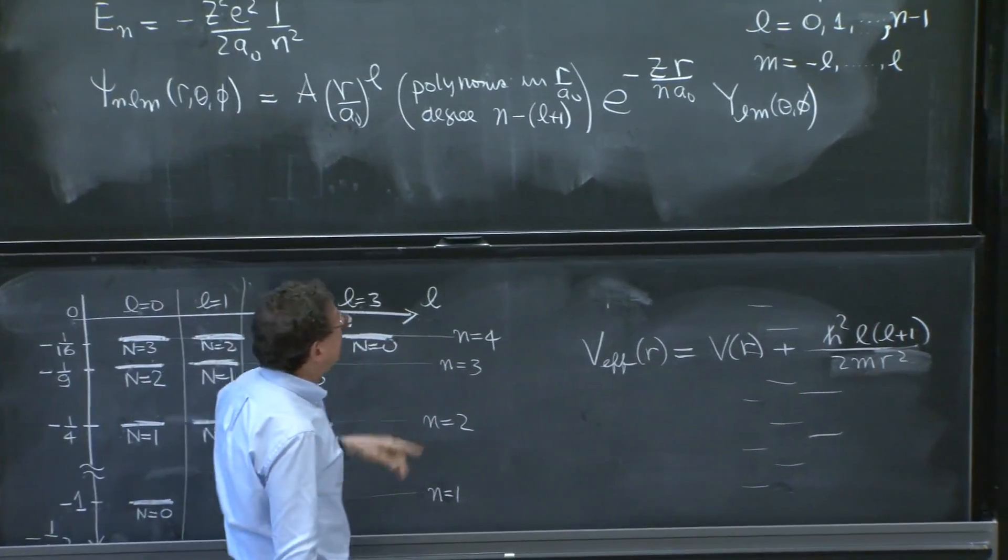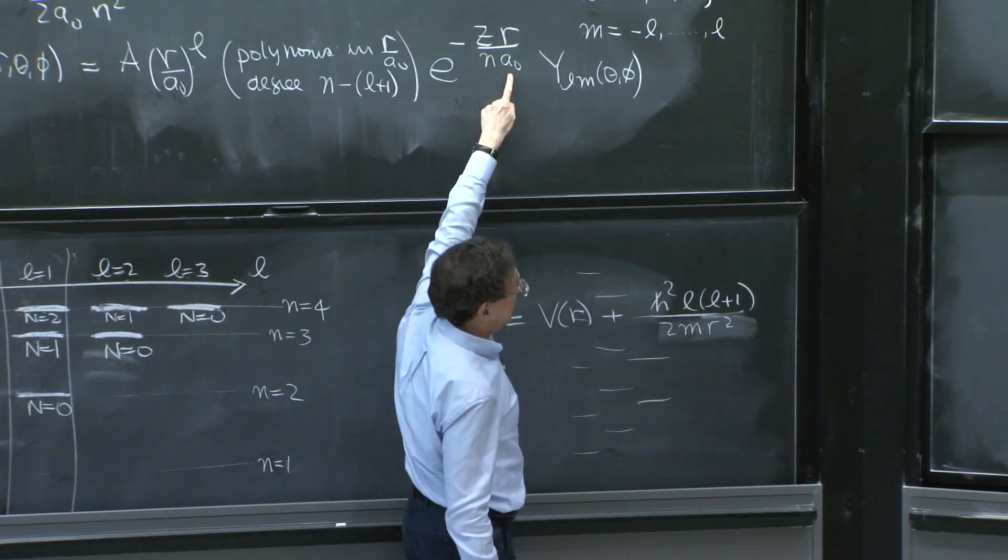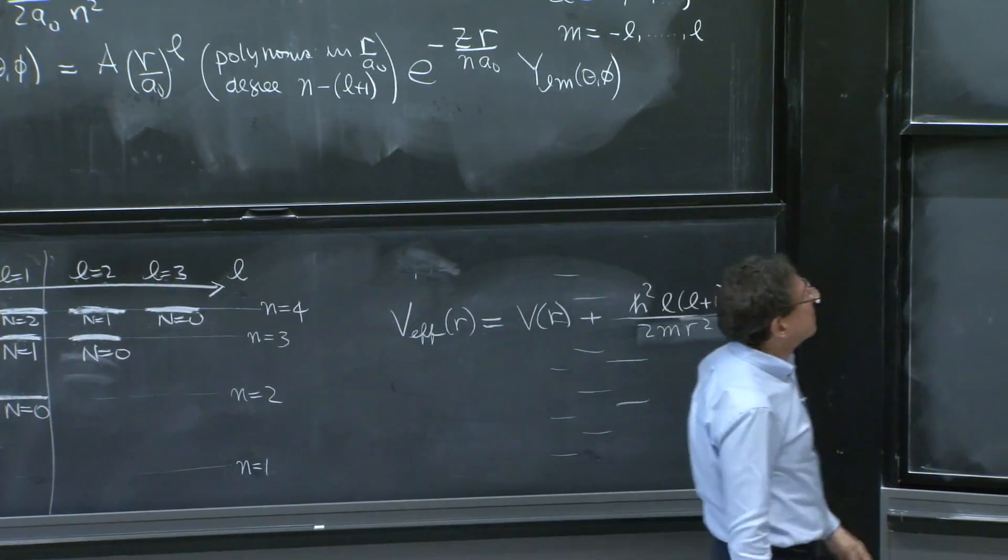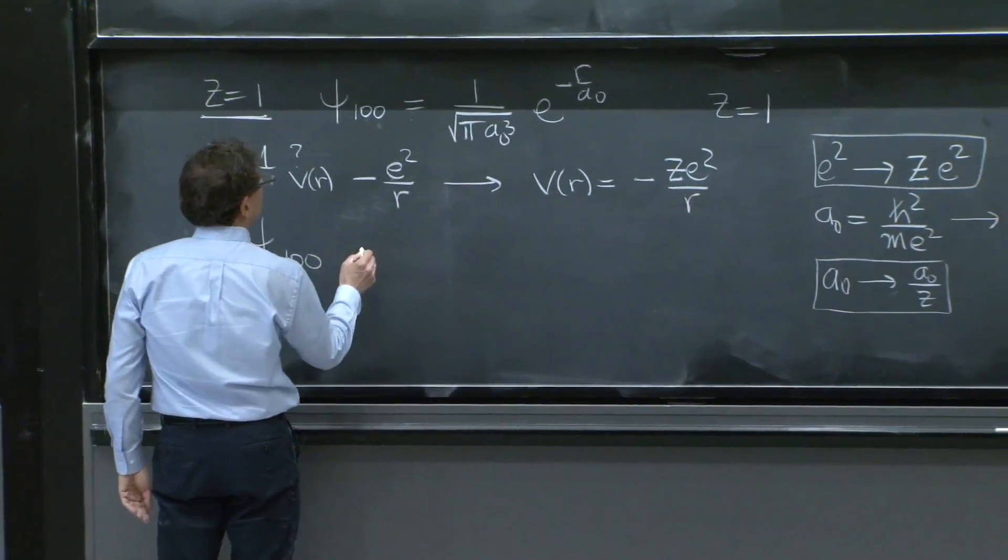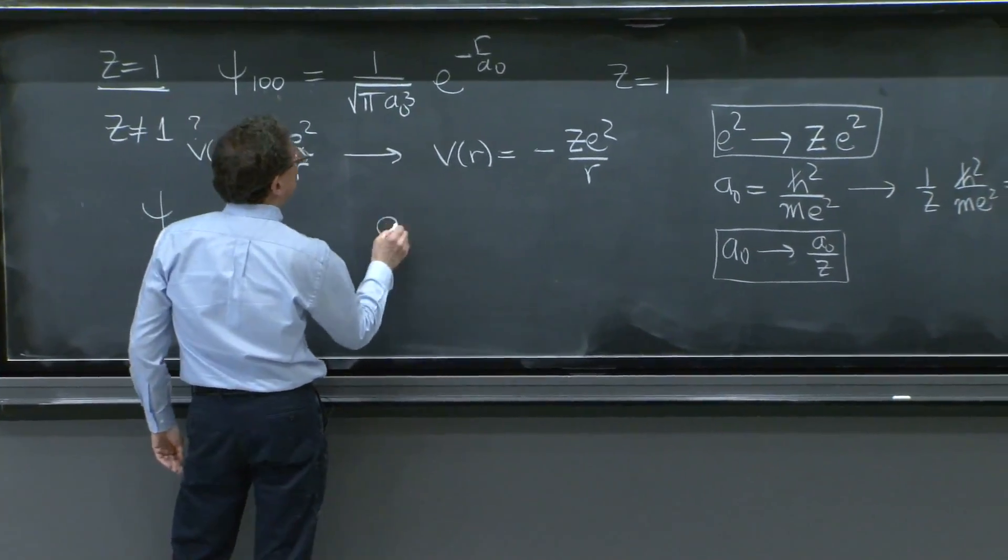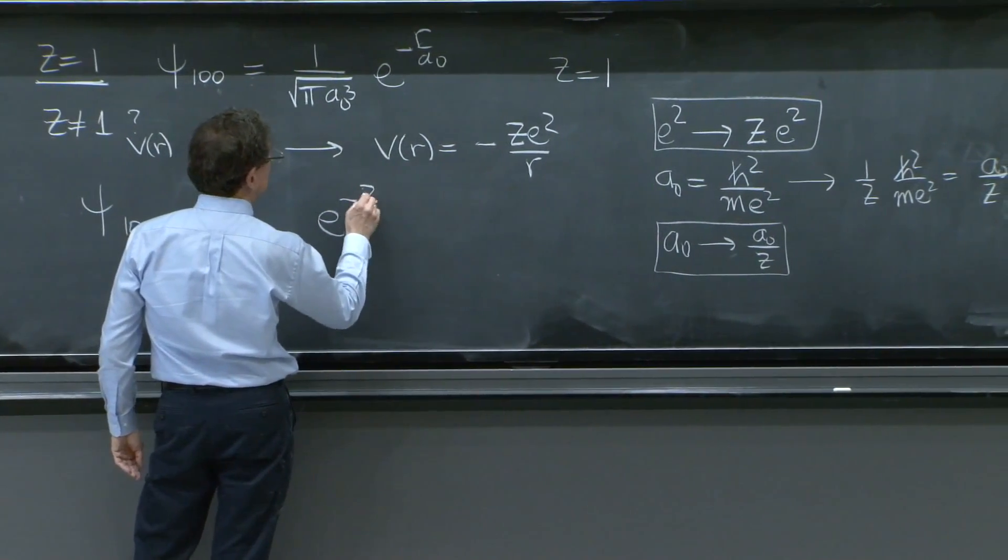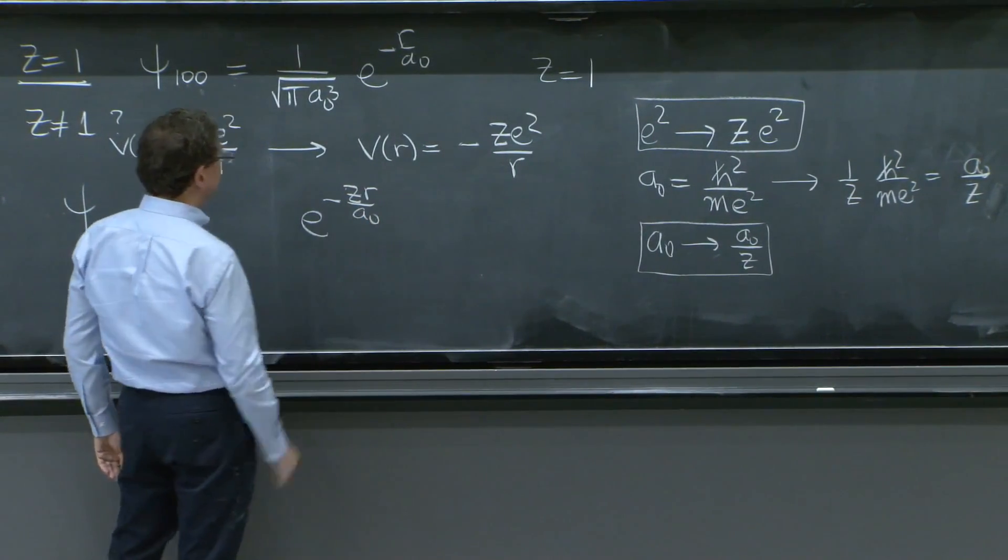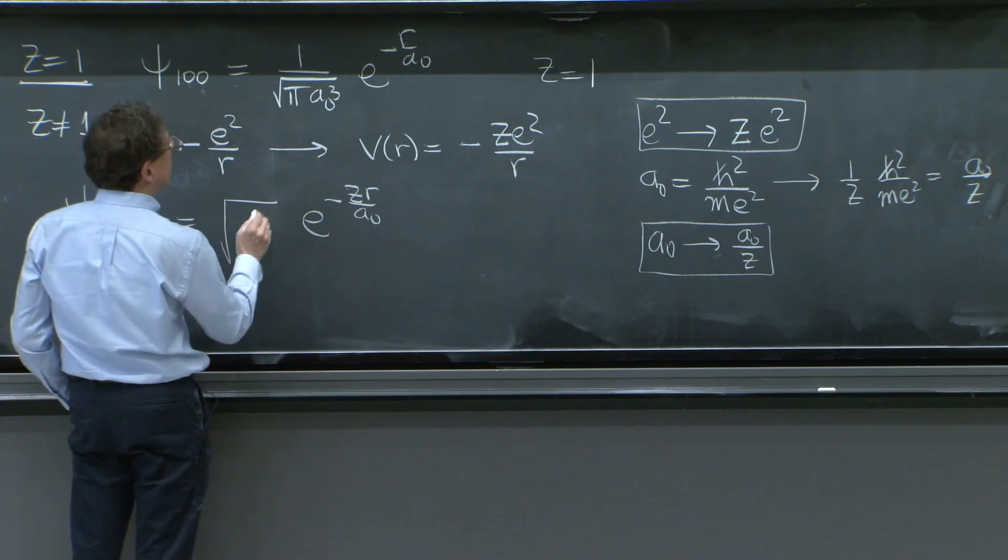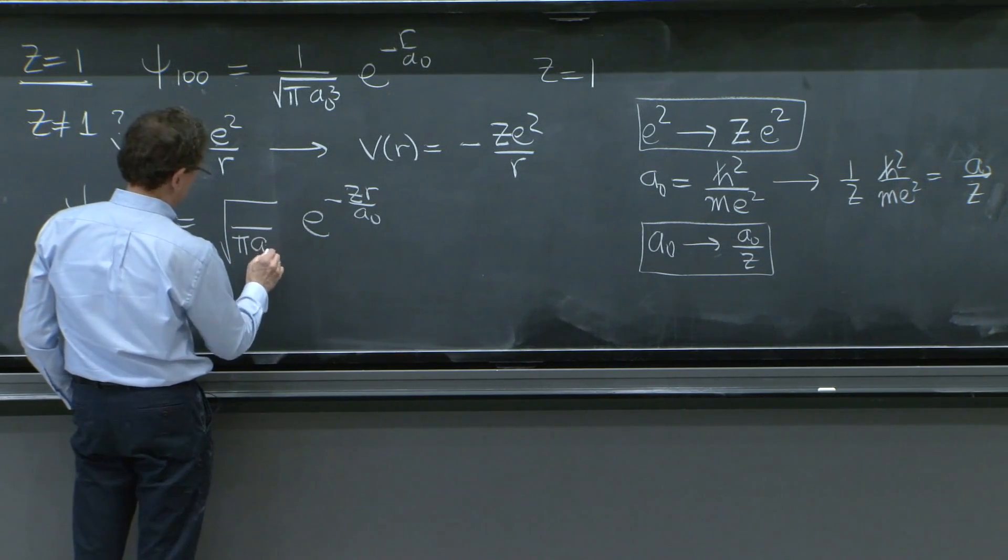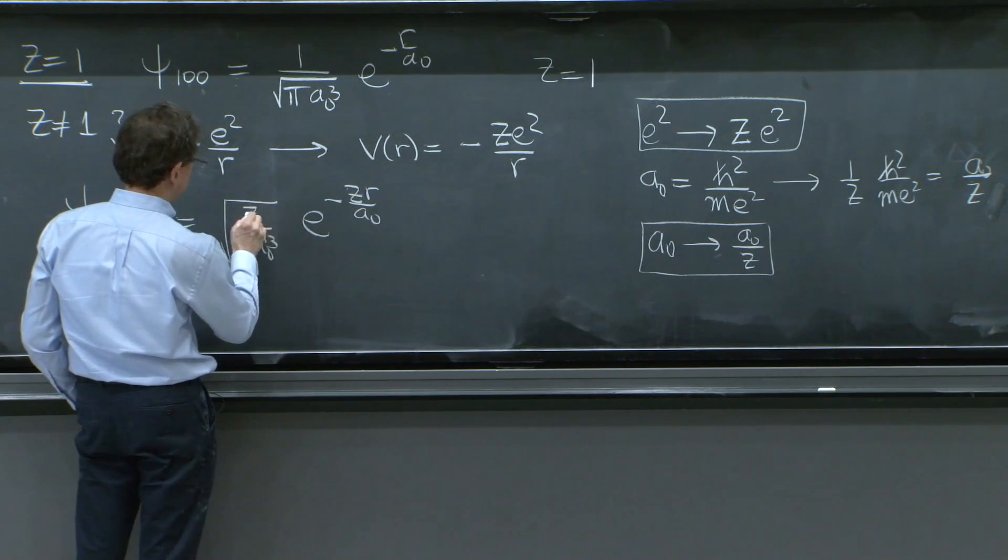We see here, however, the z is appearing in the right place because of the a0. So here, I would write e to the minus z r over a0. And can I get the normalization even right at this moment? Yes. Let's do the same change here, pi a0 cubed z cubed.